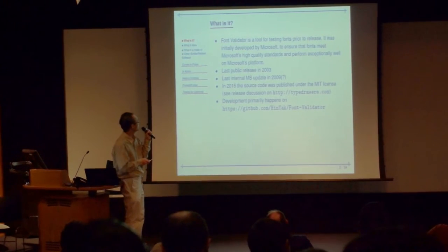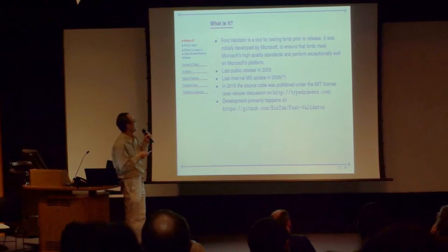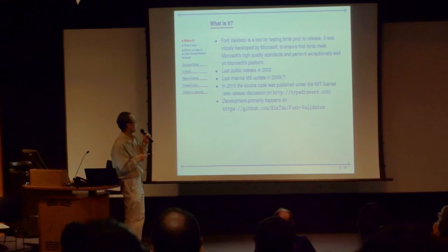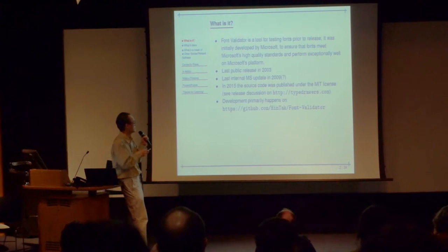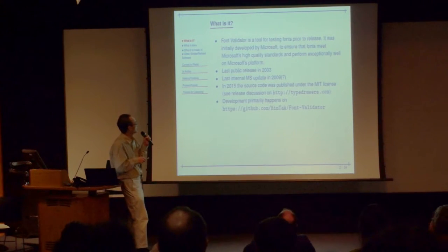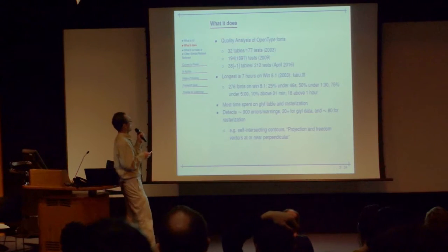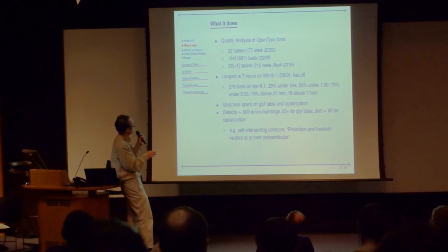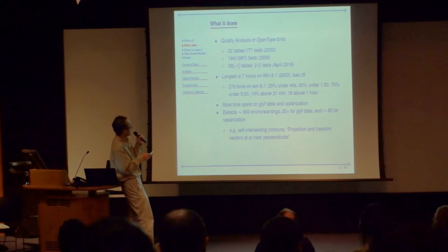It wasn't publicly released, but it was initially developed by Microsoft for the QA process. The last public release was in 2003. They made some internal updates in 2009. In November 2015, it was put onto SourceForge under the MIT license. Most development is now happening in my fork. It performs about 170 tests for the 2003 version, going up further in the internal 2009 version. When they opened it up, about five of those tests didn't work because they wanted to keep some technology proprietary.